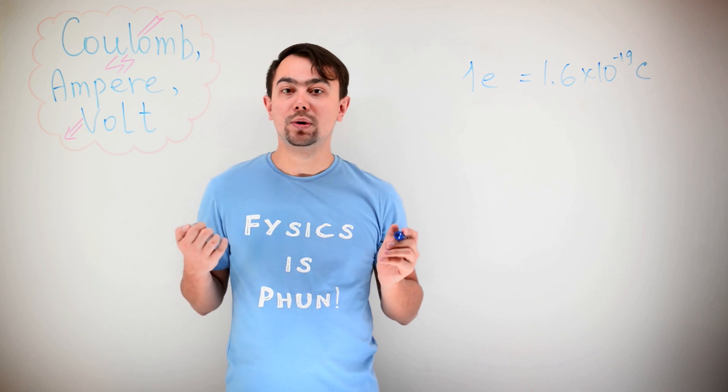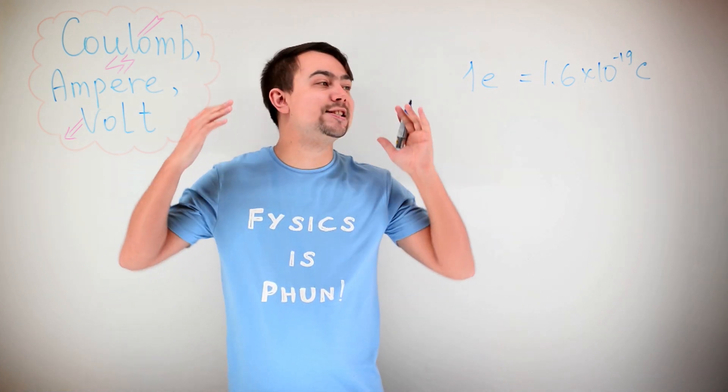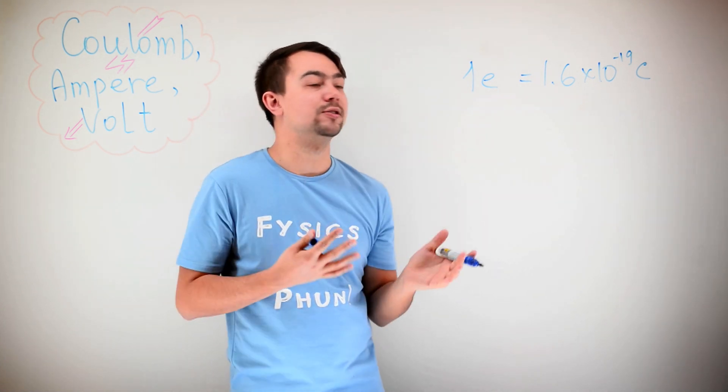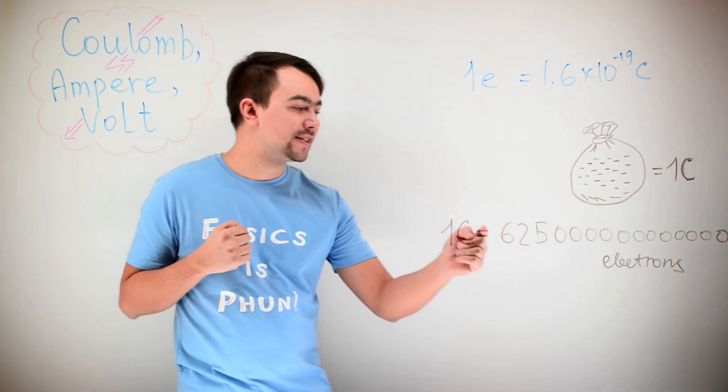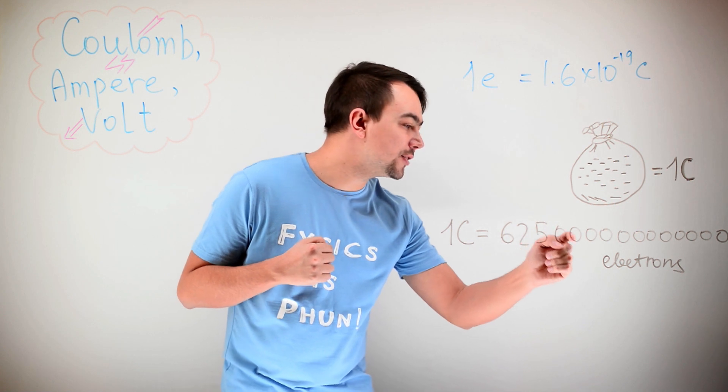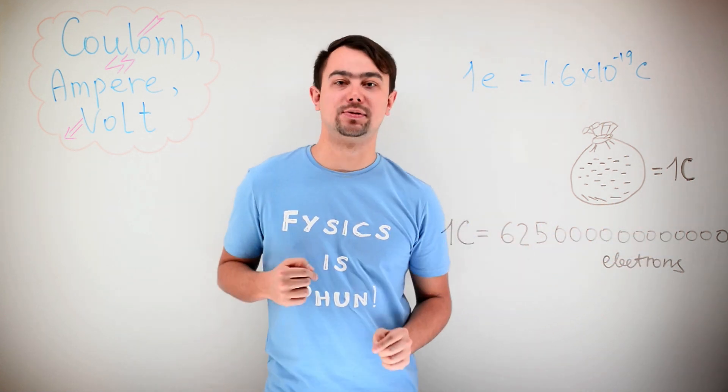So, what is a Coulomb, you ask me? The Coulomb is just a bag of electrons, right? How many electrons in this bag? Well, 6.25 times 10 to the 18th electrons.